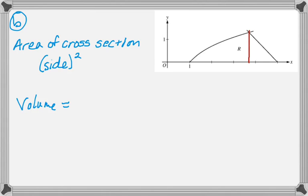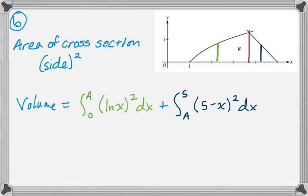So the volume will be, in the first part of the region, you're doing top-take-away-bottom, which is natural log of x minus 0, so just natural log of x. So that'll be the integral from 0 to A of the side is natural log of x. We square it. Plus, in this second region, the side of the square is the curve 5 minus x minus the x-axis, which is y equals 0. So just 5 minus x. So it'll be the integral from A to 5 of the quantity 5 minus x squared.